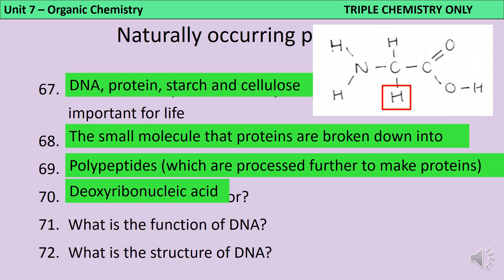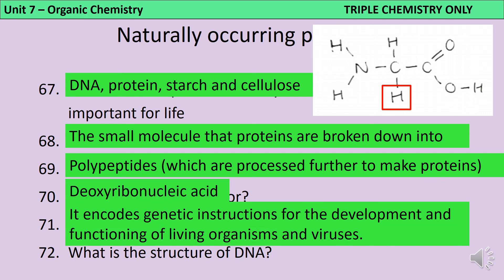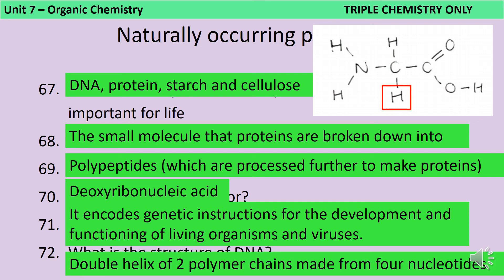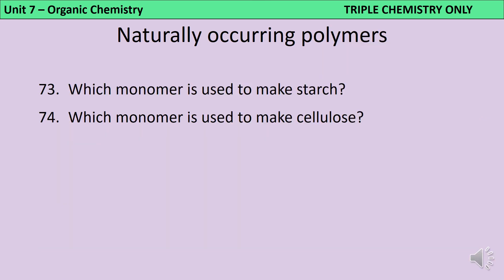DNA stands for deoxyribonucleic acid, and its function is to encode the genetic instructions for the development and functioning of living organisms and viruses. DNA has a double helix structure consisting of two polymer chains made from four complementary nucleotides. Starch is made from glucose, and so is cellulose.